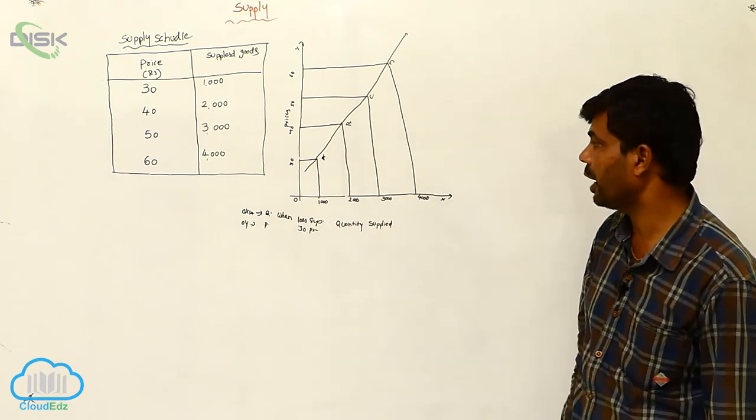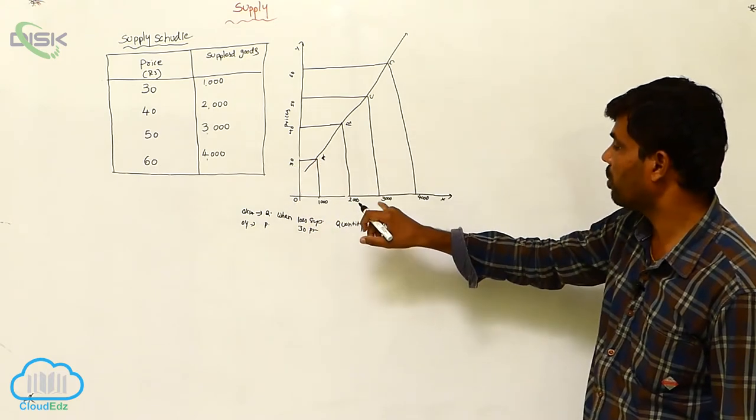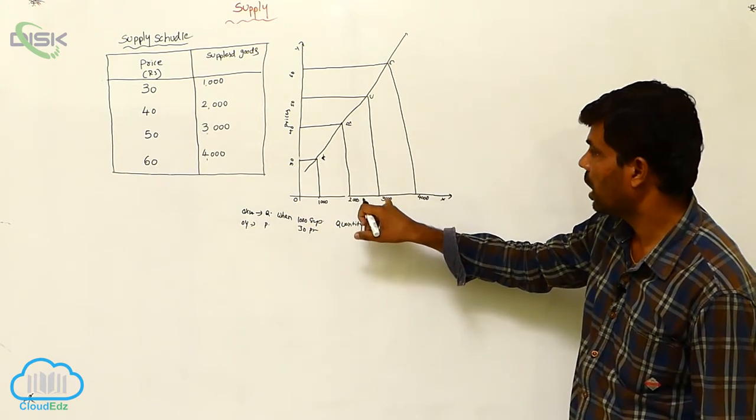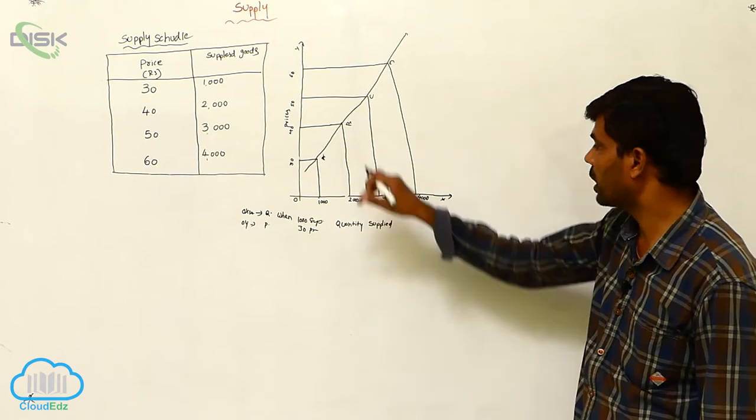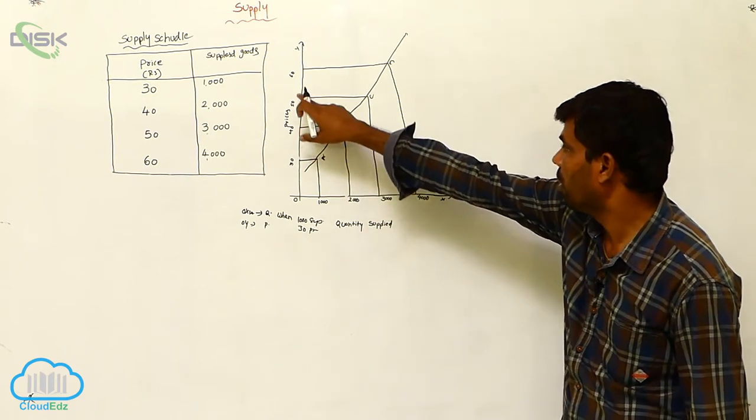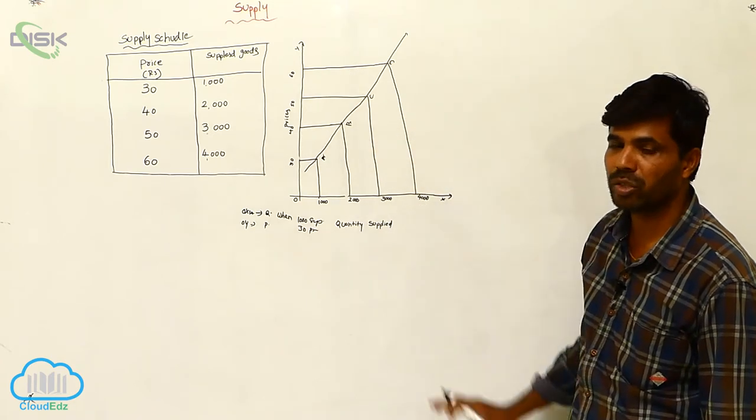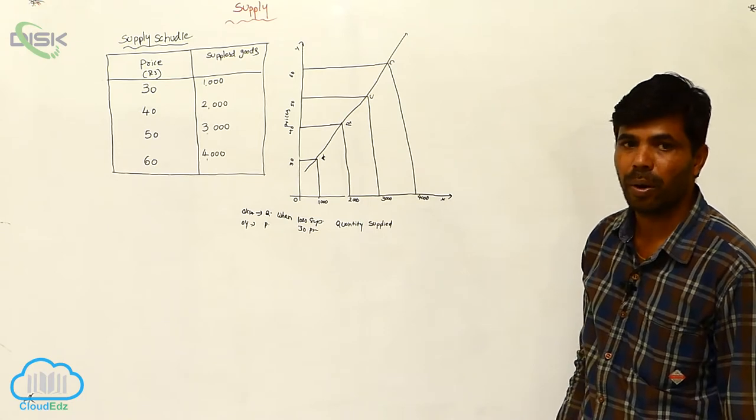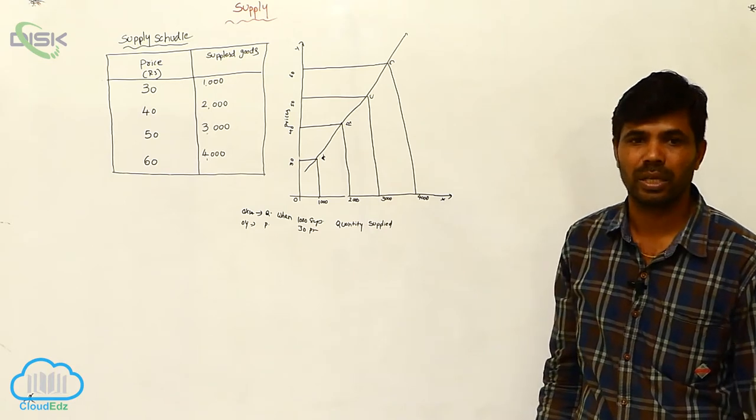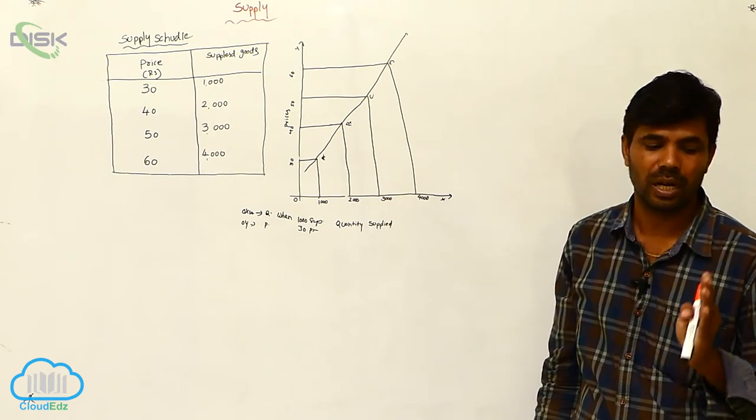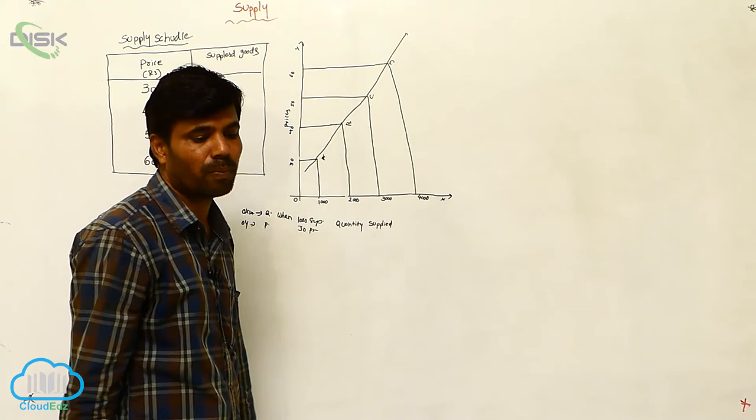Quantity 1000 and price 30 is point A. At quantity 3000, price is 50. At 4000 supply, price is 60. The relationship between supply and price: if supply increases, price increases. This is the supply curve.